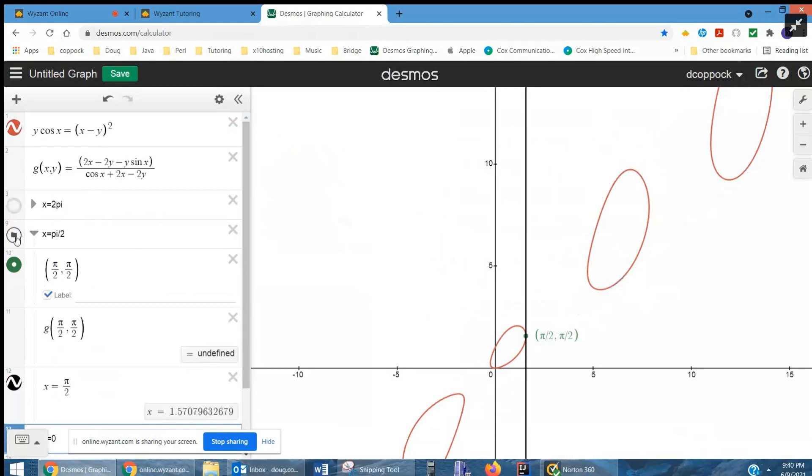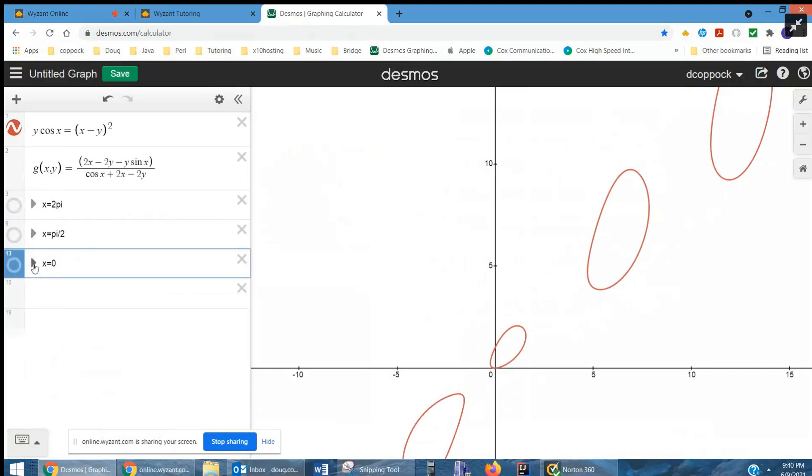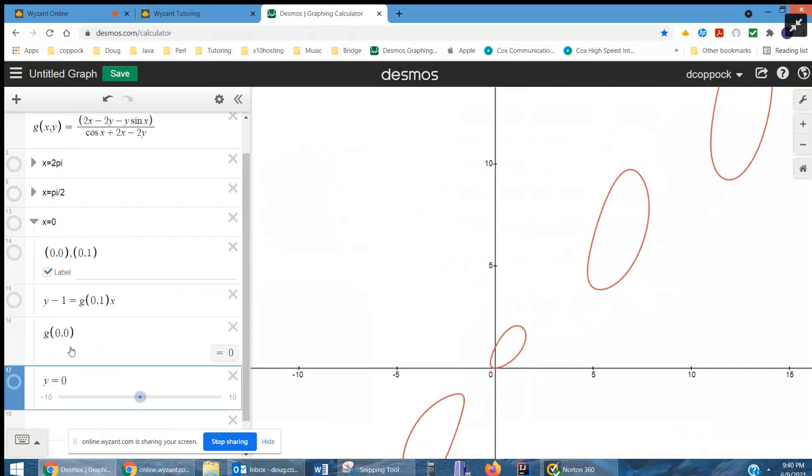And finally, let's try one more. When x is 0, y is 0 or y is 1. And if I enable that, I get a slope of 0 and I get a slope of, I don't know what g of 0, 1 is. Let's see.